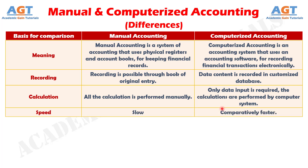Number 4. In manual accounting, a person remains involved all the time with the accounts to enter and update transactions, which is tedious and time consuming. As against, in computerized accounting, once the transaction is entered, it is automatically updated in all the accounts to which it relates, and thus the process is comparatively faster.